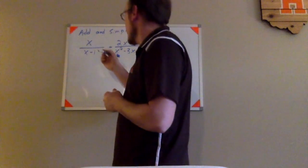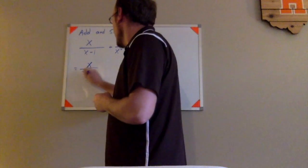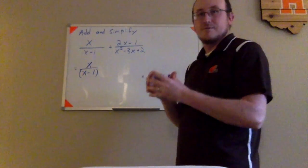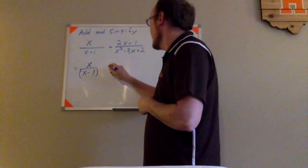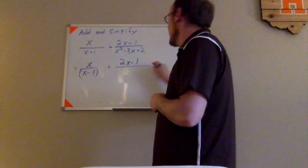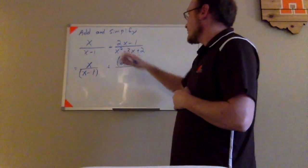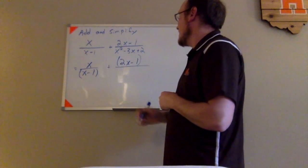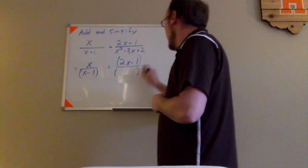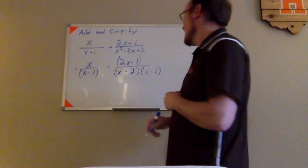This first term doesn't look like I can do much with that. I have x over x minus 1. I'm going to go ahead and put parentheses around that just so we're viewing that as one piece, as one factor of the denominator. And we're trying to add to that this 2x minus 1. I'll put parentheses around that as well so we're viewing that as a factor. And then on the bottom here we have x squared minus 3x plus 2 which can factor into two linear binomials. It would be x minus 2 and x minus 1.